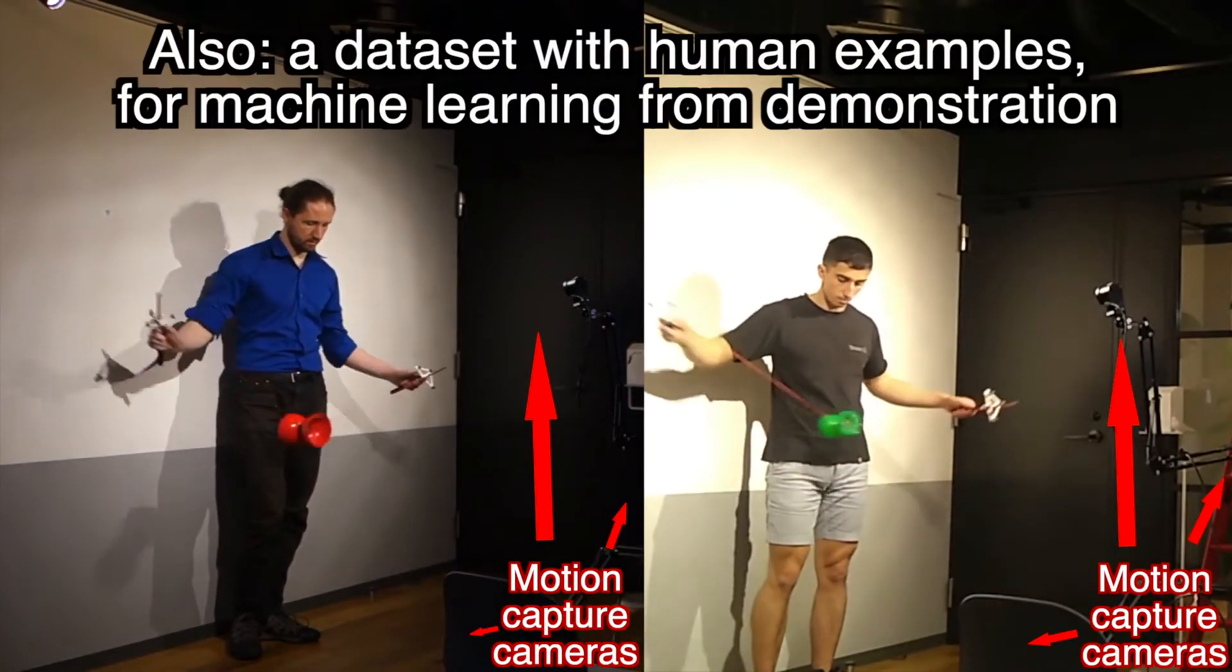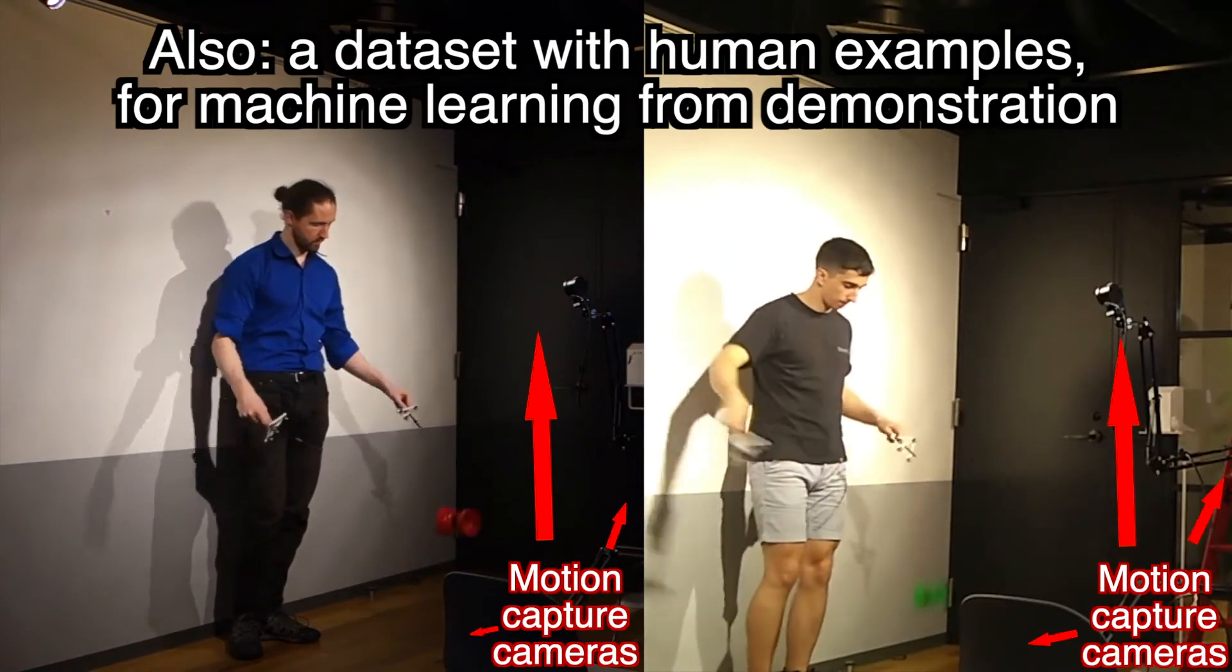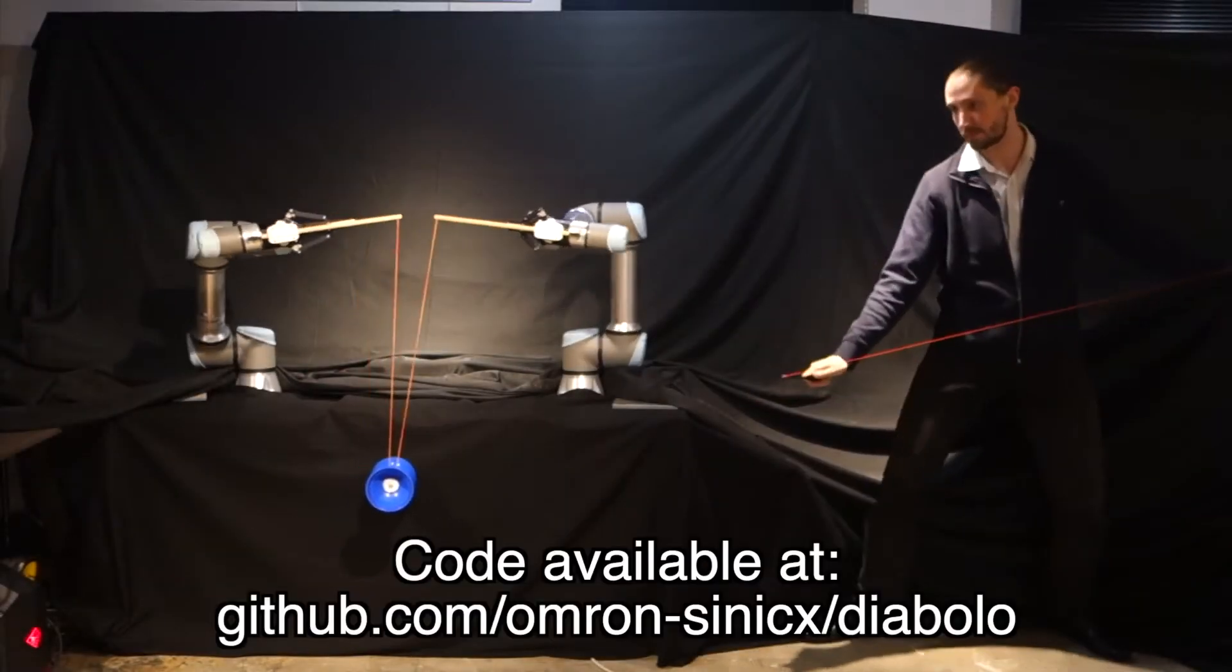Next, we really want this to be a machine learning tool, so we included a dataset of human demonstrations, which you can use to teach your robot how to juggle a diabolo.